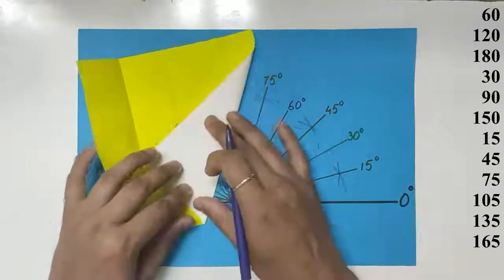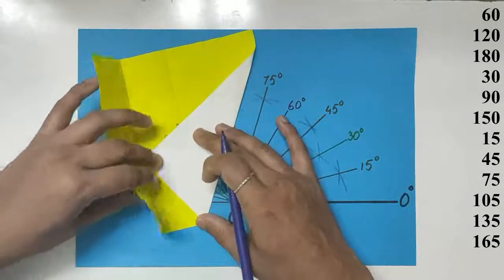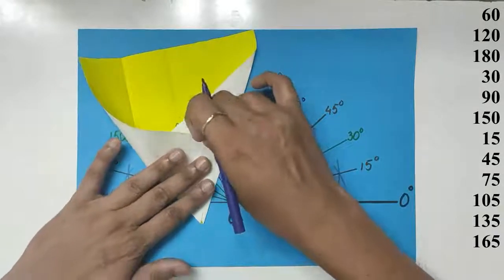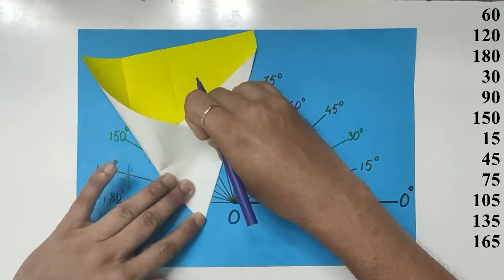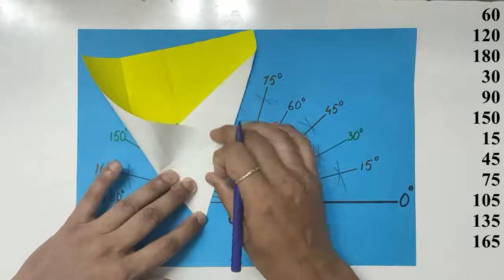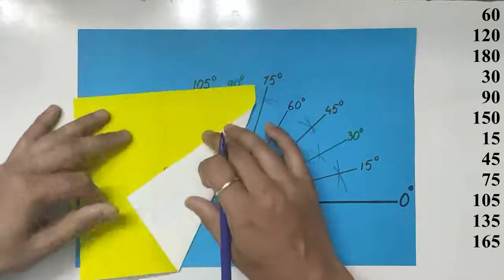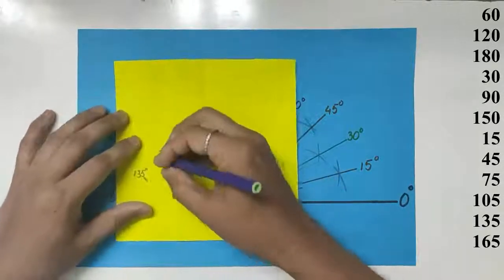Fold the 60 and fold the thing over so the lower edge meets the fold line, folding from the center. That line will be 120 degrees.